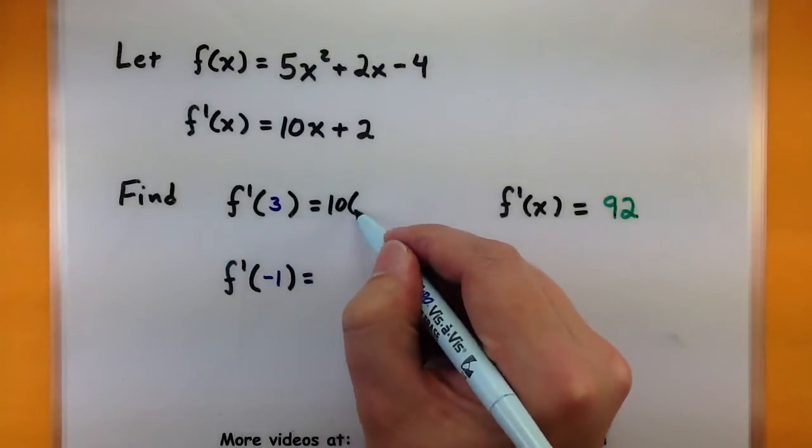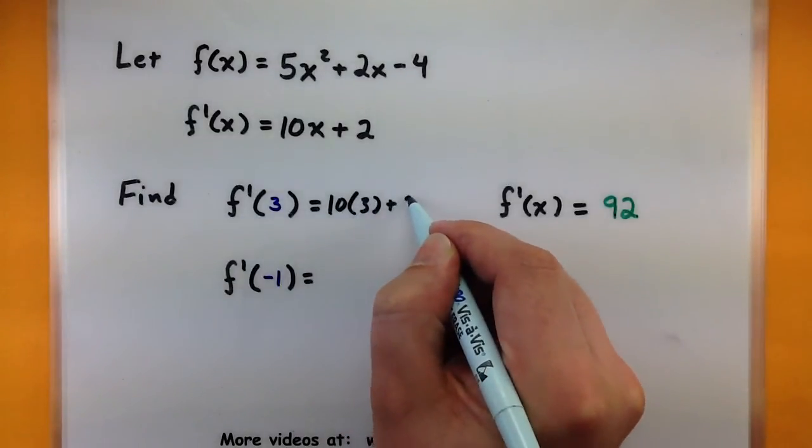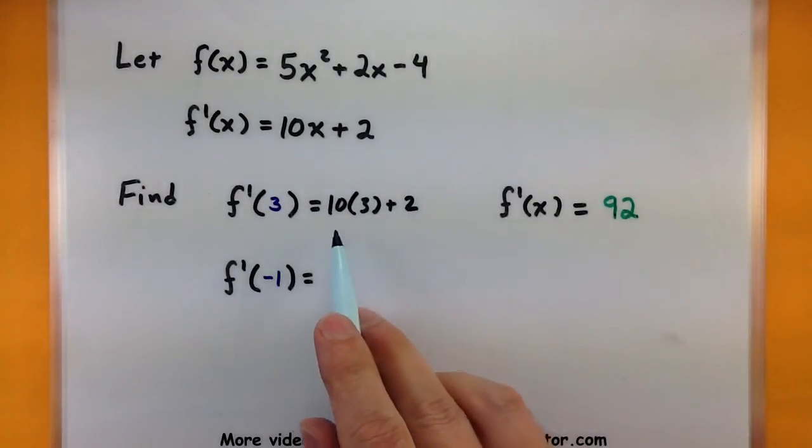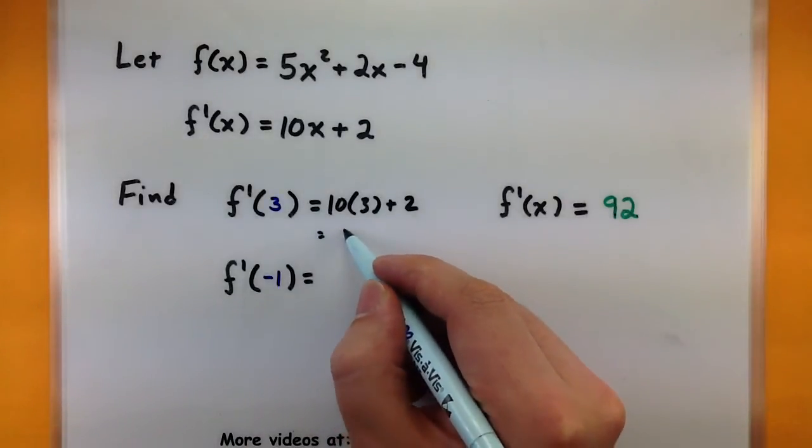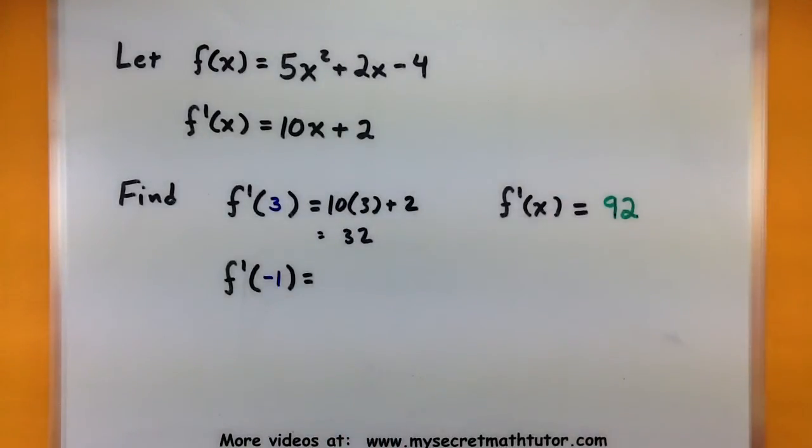So to actually go through and figure out what the derivative of 3 is, then I simply substitute that value into my derivative function. So let's see, 10 times 3 is 30 plus 2, 32. So I know immediately that the slope of the tangent line at x equals 3 is 32.